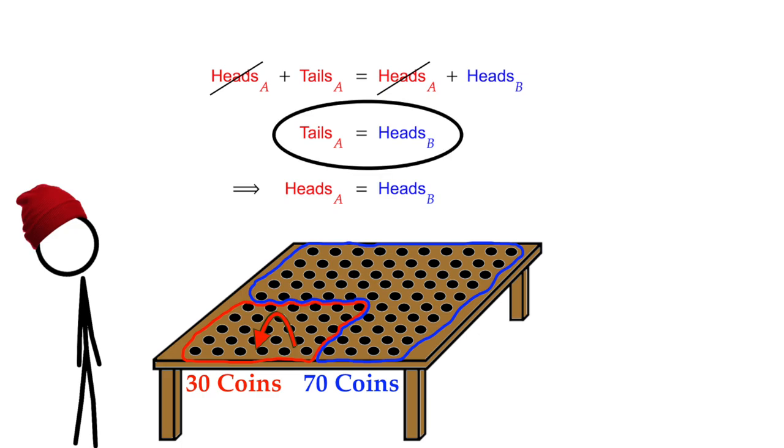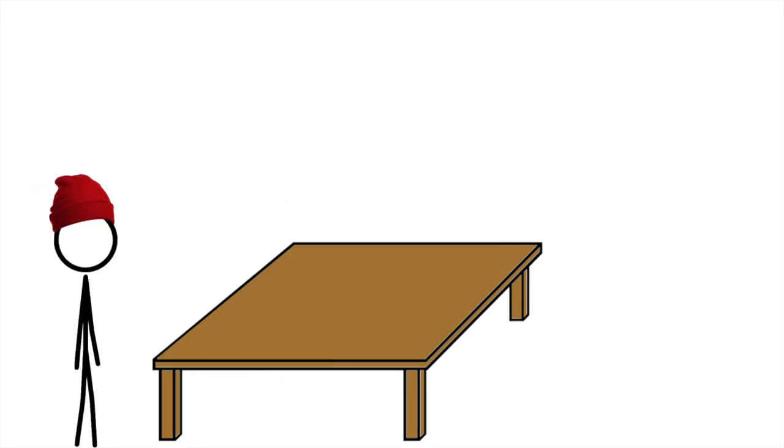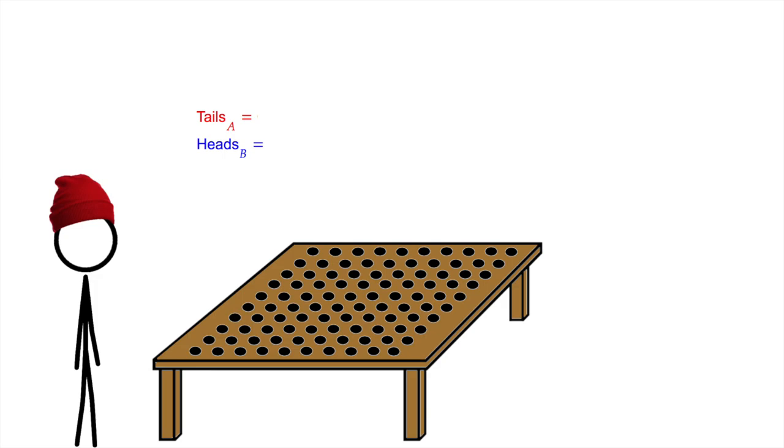It all seems to stem from this equation. Tails in A equals heads in B. So, let's do the whole thing again, except this time, I'm going to keep track of how many tails are in A, and how many heads are in B.